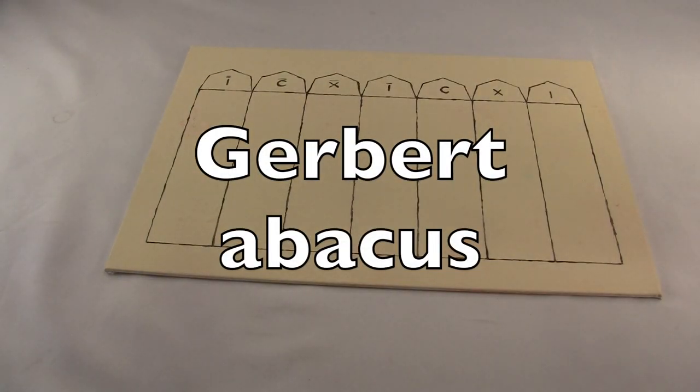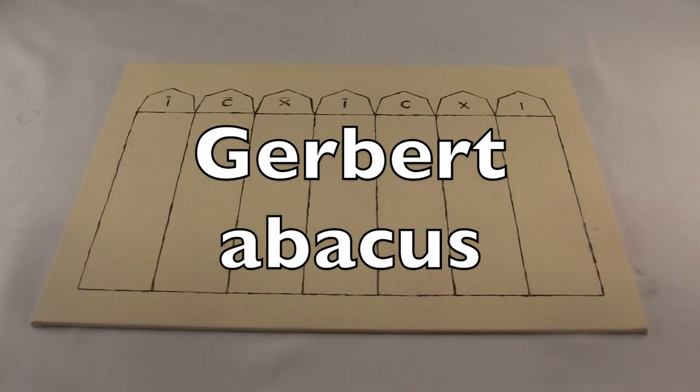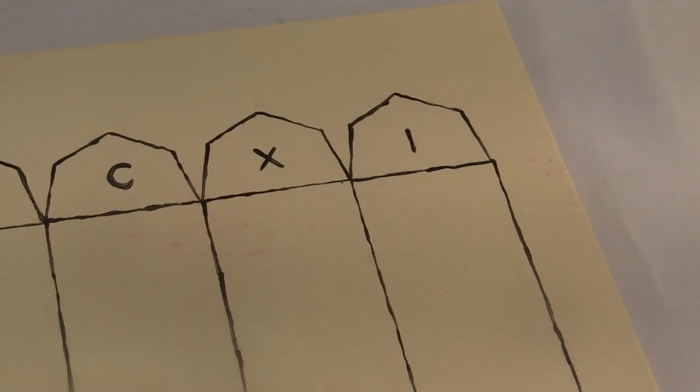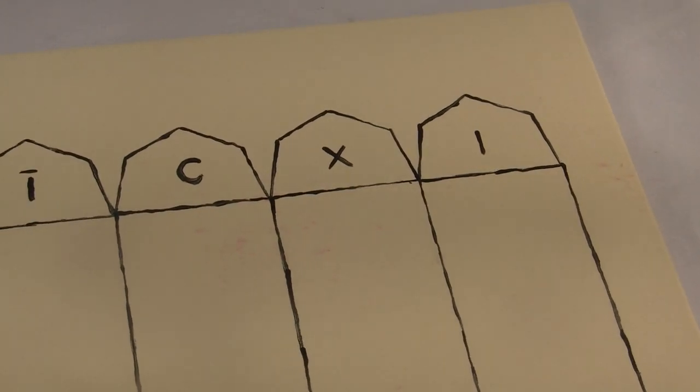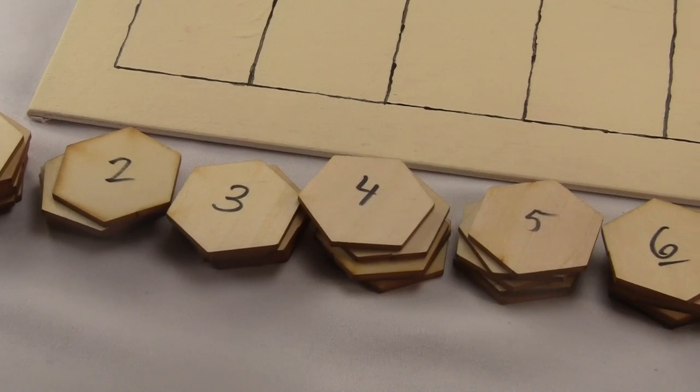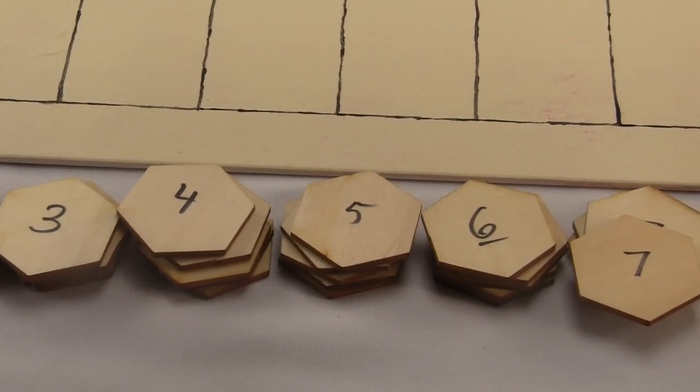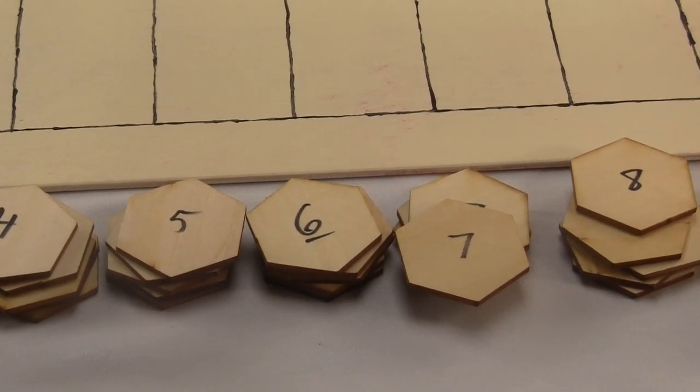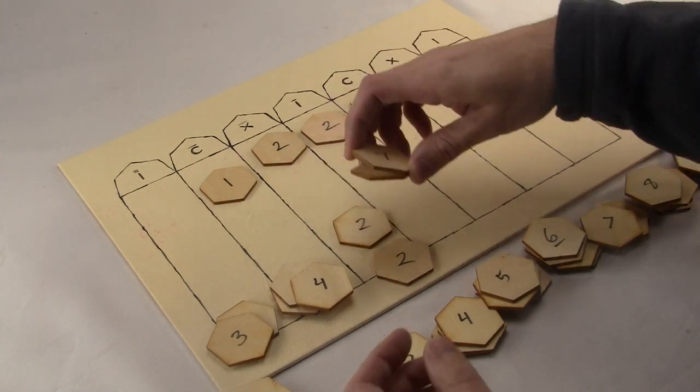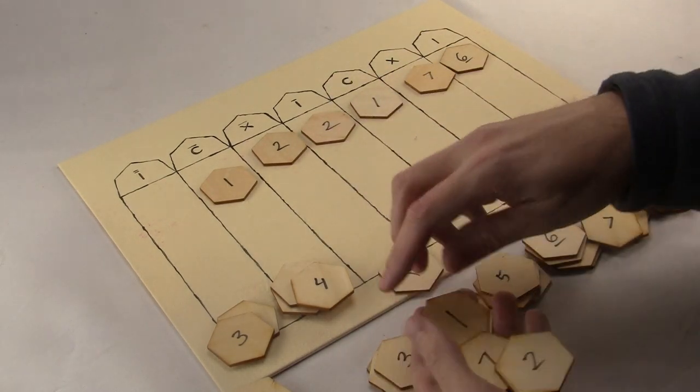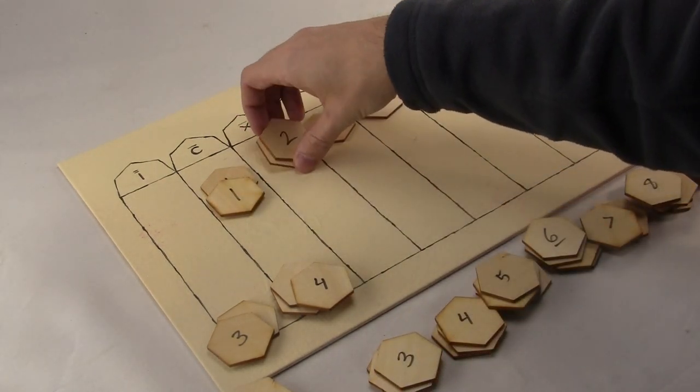This is the Gerber abacus, invented around the year 1000. It's a board divided into vertical columns, together with a set of movable counters labeled 1 through 9. And that's it. You move them around, put some on, take some off, and you can add and multiply.